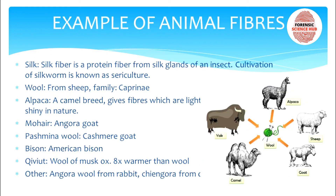For animal fibers, a very common example is silk — a protein fiber secreted from the silk glands of the silkworm. The larva of the silkworm makes the silk fiber with the help of its saliva. The cultivation of silkworm is known as sericulture. Wool is obtained from sheep. Alpaca is a camelid breed that gives fibers which are light and shiny in nature. Other camelids include llama, vicuña, and guanaco, which also provide wool.